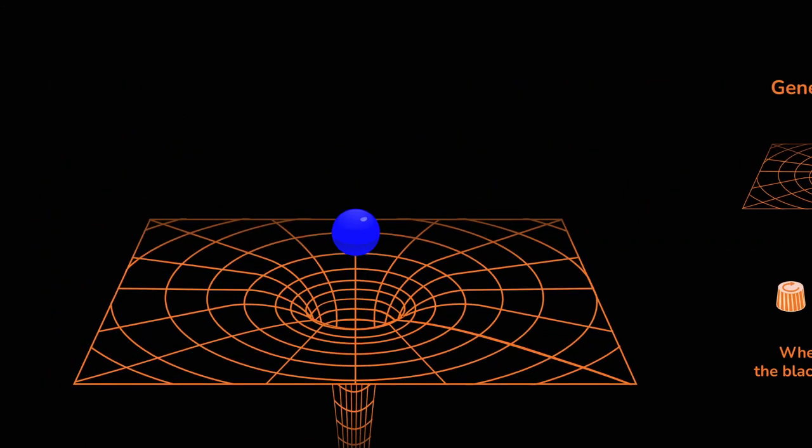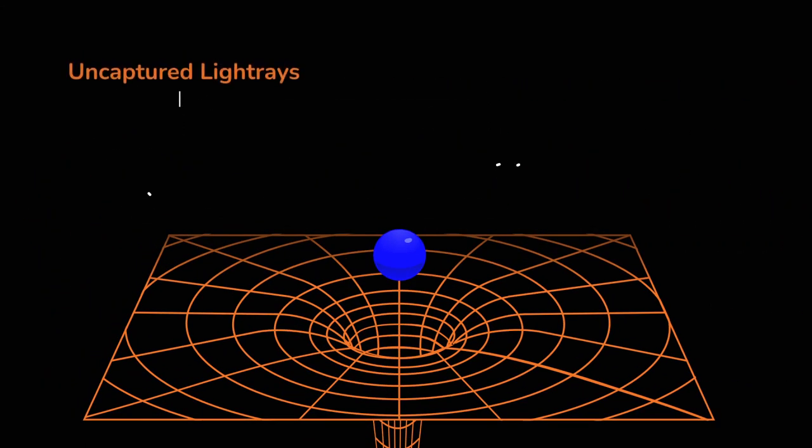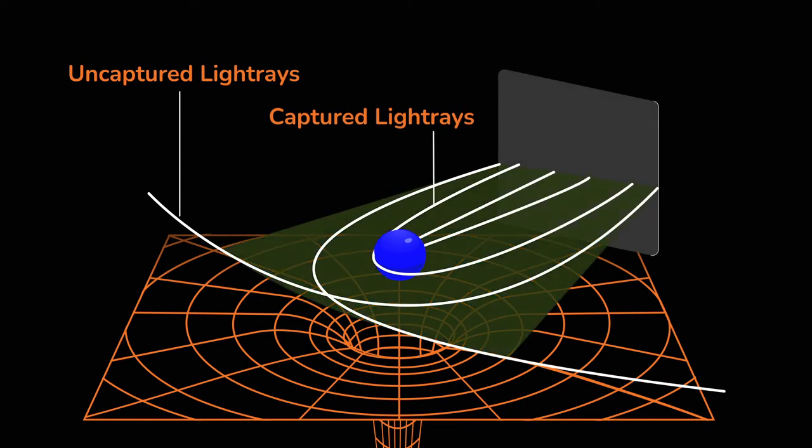Curved spacetime forces light rays to bend. Rays that closely approach the black hole are captured by it. Therefore, these directions appear dark to a faraway astronomer. This dark region is the shadow of a black hole.